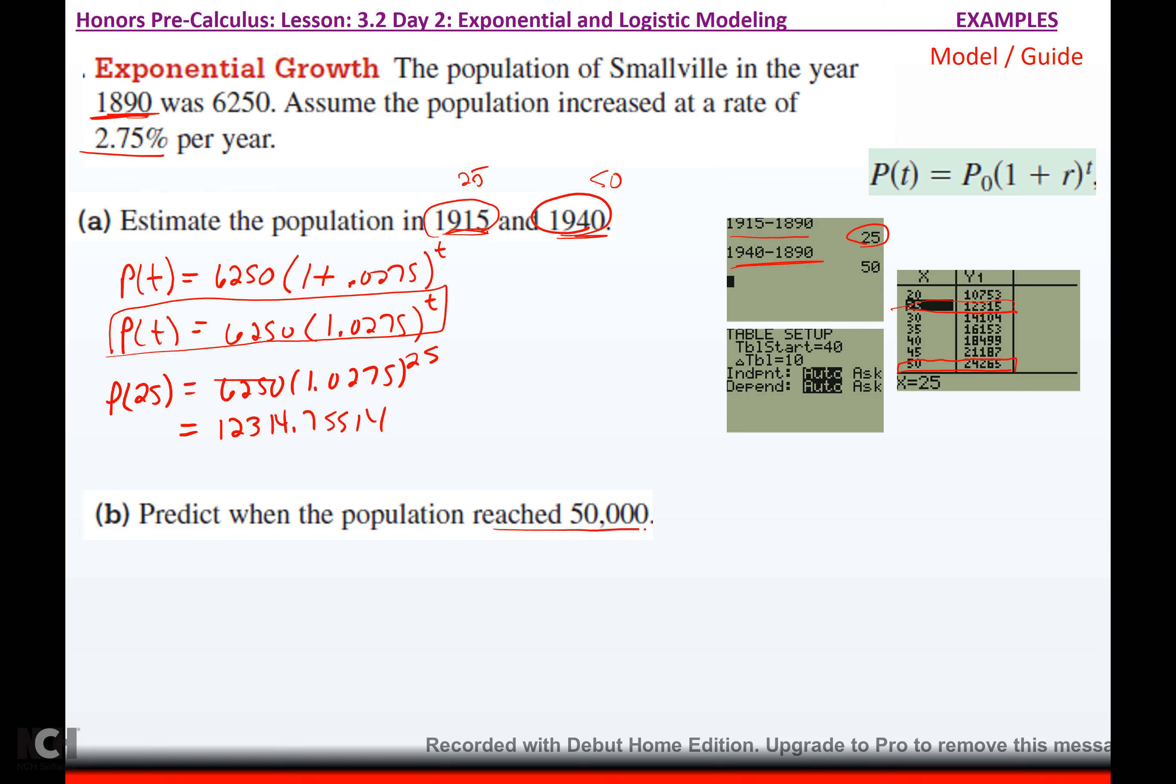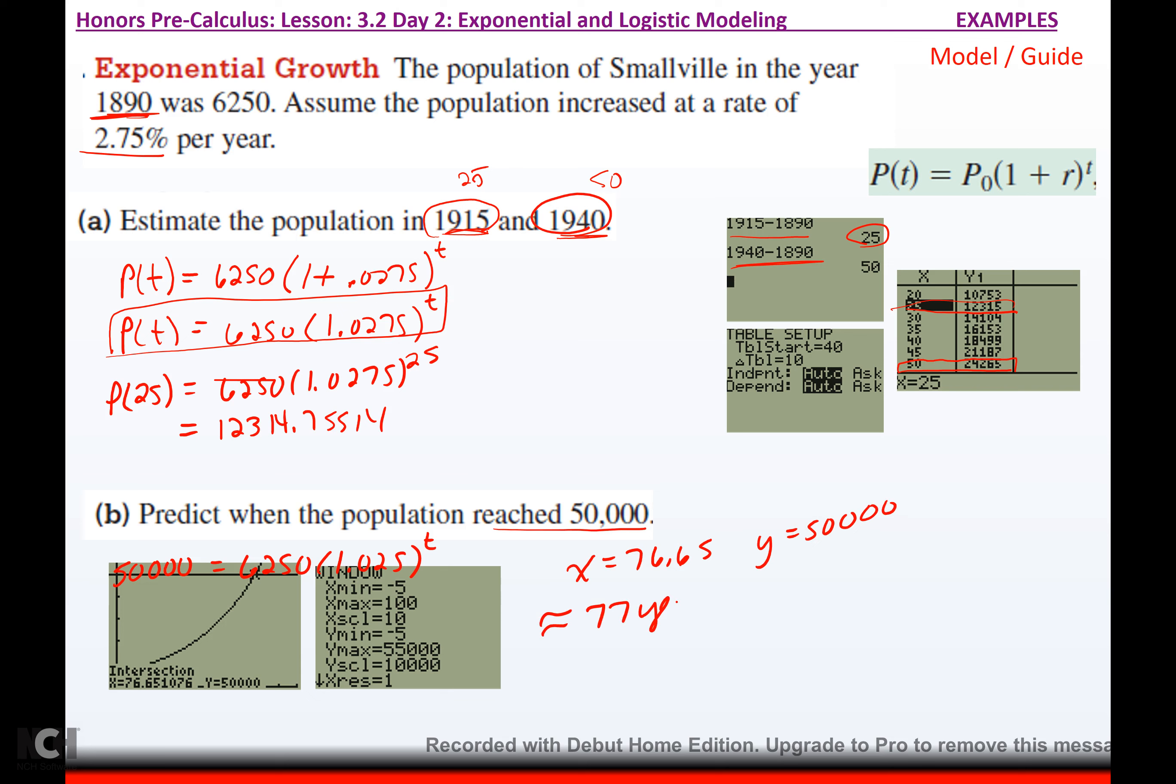So, then we have to predict when the population reached 50,000. So, now they're telling me to make the final population 50,000. That is 6250 times 1.0275 to the T. And again, now we're back to having T in the exponent. We don't know how to solve that. We don't have the algebra tools to get T out of the exponent, so we're going to Y1, Y2. And if I calculate the intersection point, there's my window if you want to see it. They intersect when X is 76.65, and then my Y will be the 50,000. So, it's going to take approximately 77 years, but they want to know when that will be. Well, if this all started in 1890, and I add 77 years to that, that's going to put it in the year 1967.